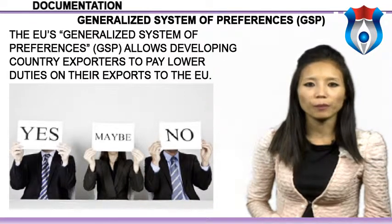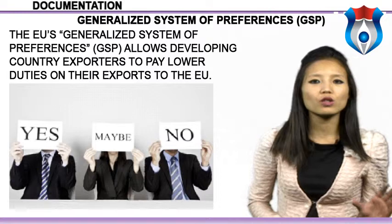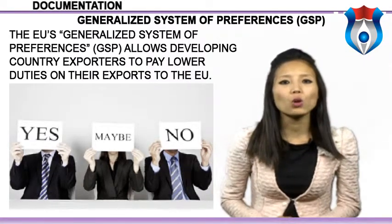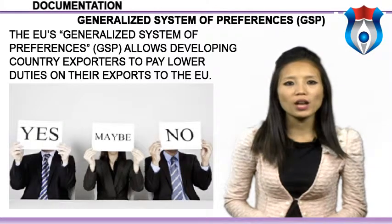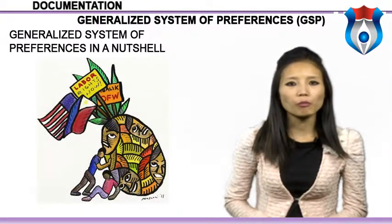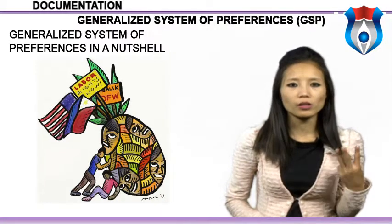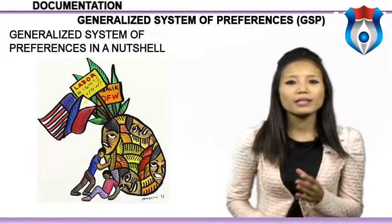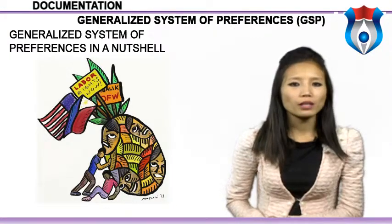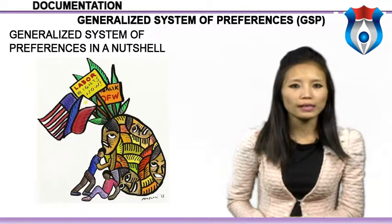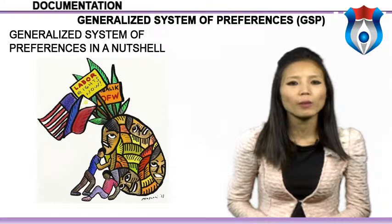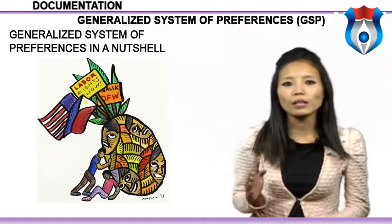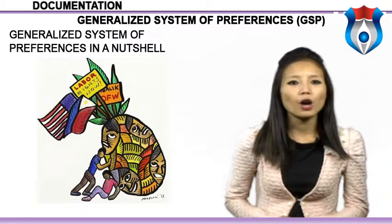The EU's Generalized System of Preferences (GSP) allows developing country exporters to pay lower duties on exports to the EU. This gives them vital access to EU markets and contributes to economic growth. The reformed GSP, which will apply from 2014, will further focus support on countries most in need. There are three main arrangements of the system: the standard GSP, which offers generous tariff reduction to developing countries — practically meaning partial or entire removal of tariffs on two-thirds of all product categories; GSP Plus, which provides full removal of tariffs on essentially the same product categories, granted to countries which ratify and implement international conventions relating to human and labour rights, environment, and good governance.